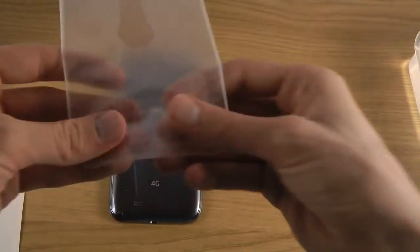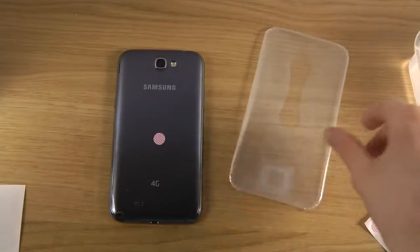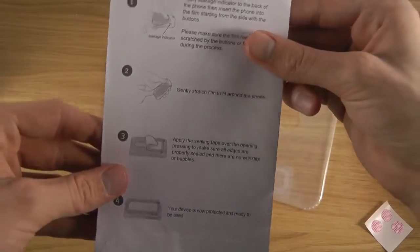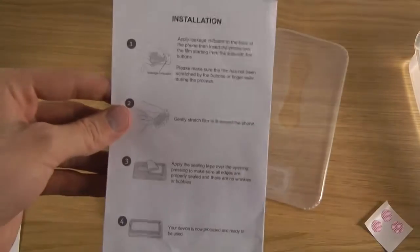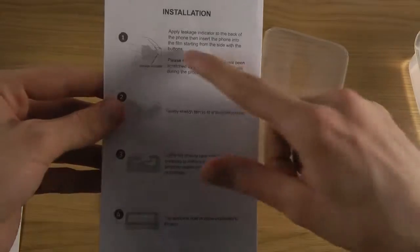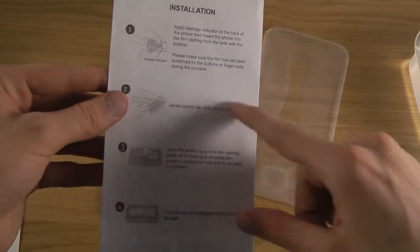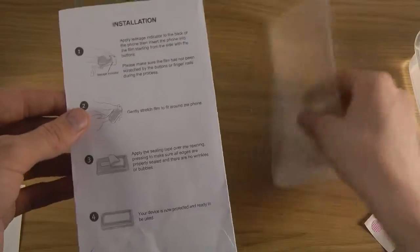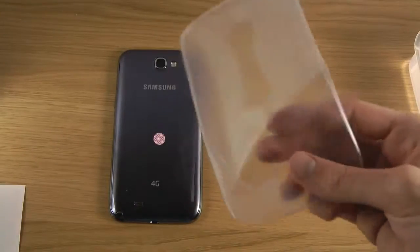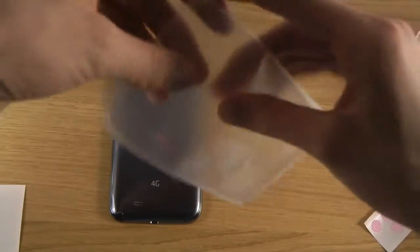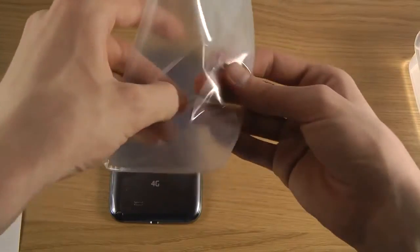To the back, just like that. And now there are some instructions that come along here saying exactly what you should do. First, you should apply the leakage indicator. Put it on, make sure that there are no scratches and that it isn't destroyed or anything like that, and then you should just put it on.